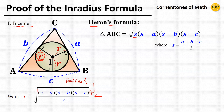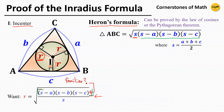This formula contains the semi-perimeter S, and more importantly, this S minus A, S minus B, S minus C part, that is also present in the in-radius formula. Heron's formula can be proved by using the law of cosines or the Pythagorean theorem, and it does not require the law of cotangents that we are about to prove later. So this is one way to calculate the area of the triangle, but the area of triangle ABC can be calculated by another method.